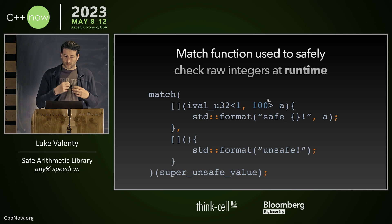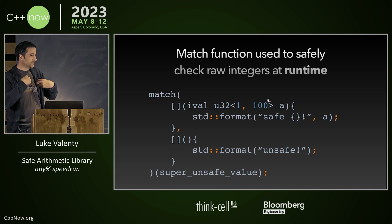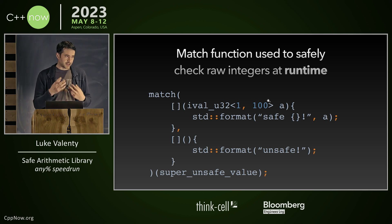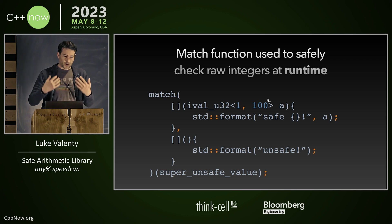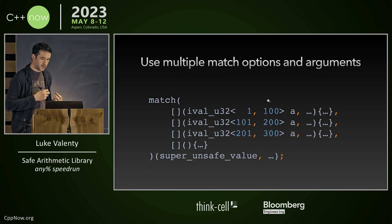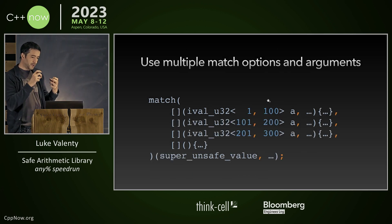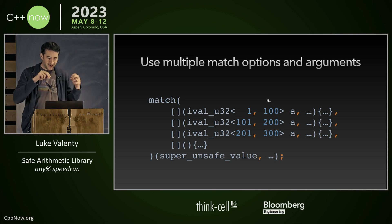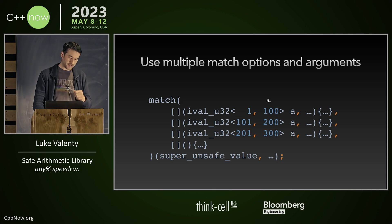However, we do need to get data into our system and validate that it fits our constraints. So we have this match function, which is kind of like pattern matching. It will evaluate a set of potential functions with safe arguments, and the first one that is satisfied will be executed. If none are satisfied, it executes the default.